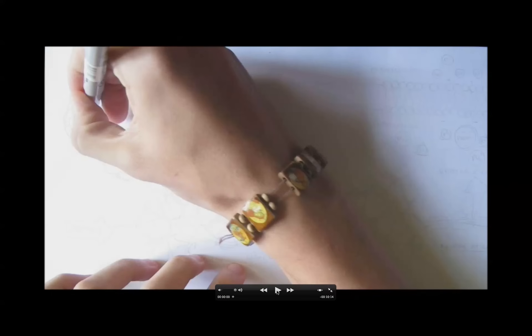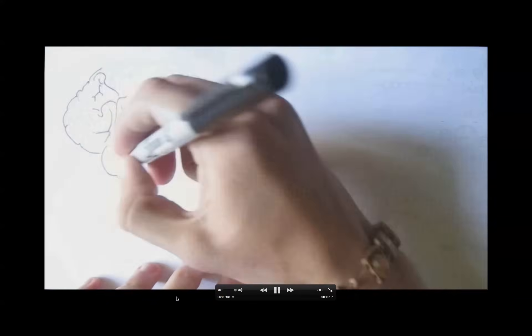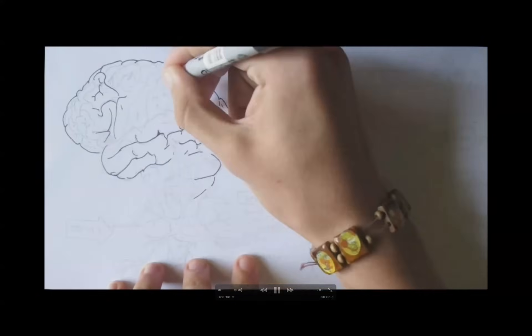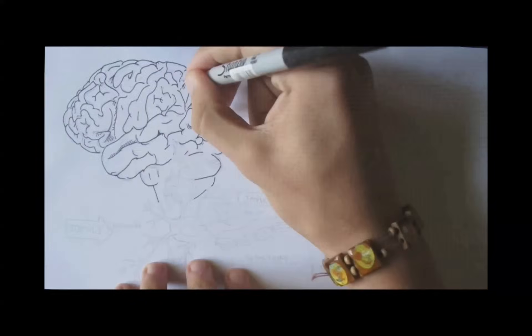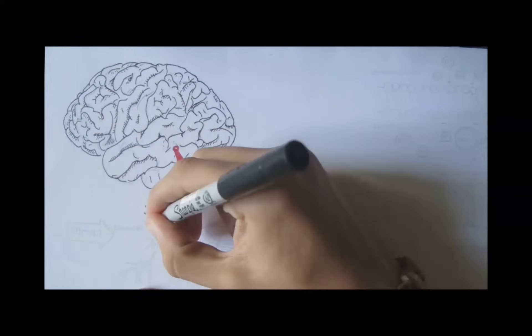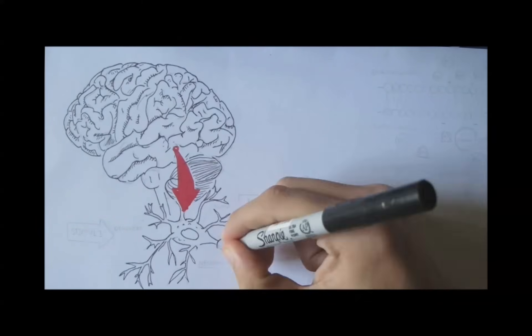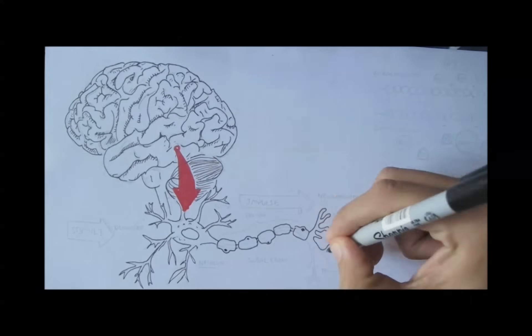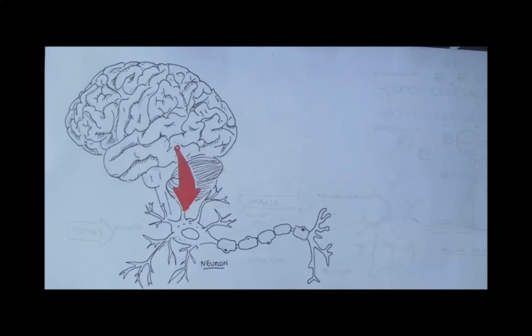The brain is made up of many types of cells. The most important being the neuron, which are able to send signals all around the body. They look something like this.